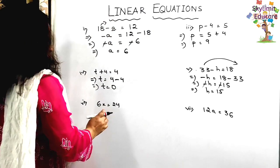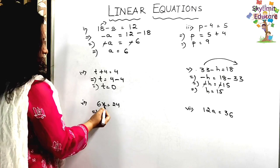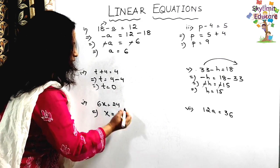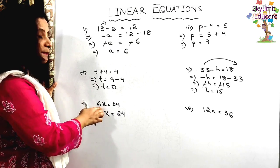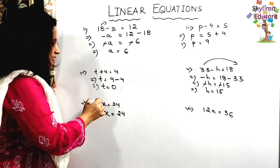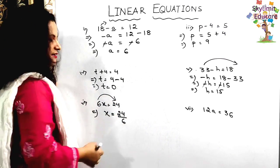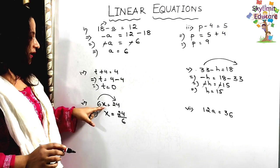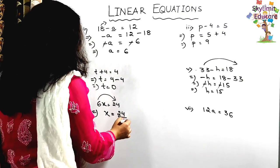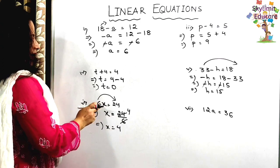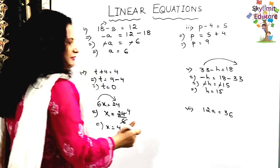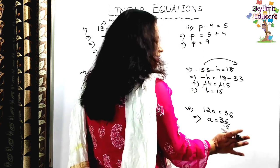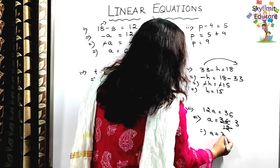Next: 6x equals 24. I need to find x. Here 6 is multiplied to x. When 6 shifts to the right-hand side, it becomes division: x equals 24 divided by 6 equals 4. Verify: 6 times 4 equals 24. Correct. Similarly: 12a equals 36. Shift 12 to the right-hand side as division: a equals 36 divided by 12 equals 3.